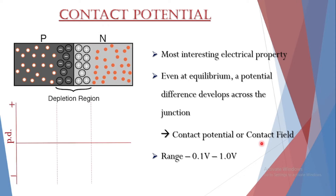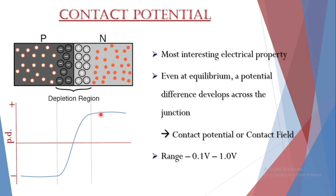If we plot a graph of how potential difference varies across the junction: the P side is on one side and the N side is on the other, with the depletion or potential barrier region in between. On the P side there is a negative potential, on the N side a positive potential, and in the depletion region we can observe a variation in potential difference, which is evident from this graph.